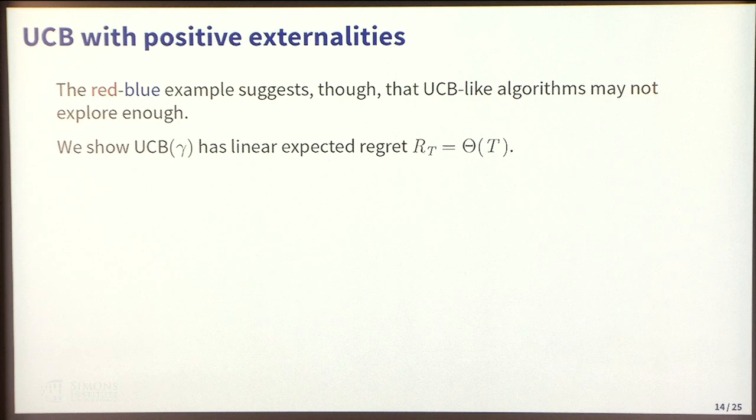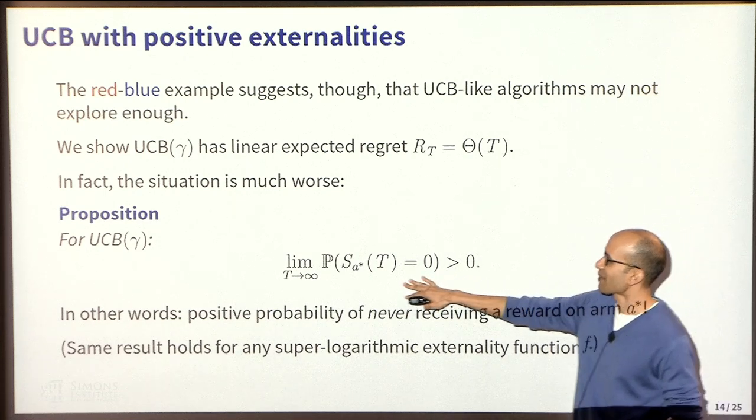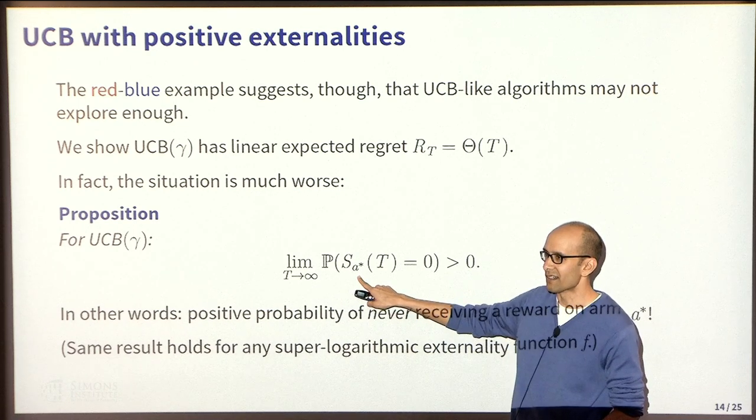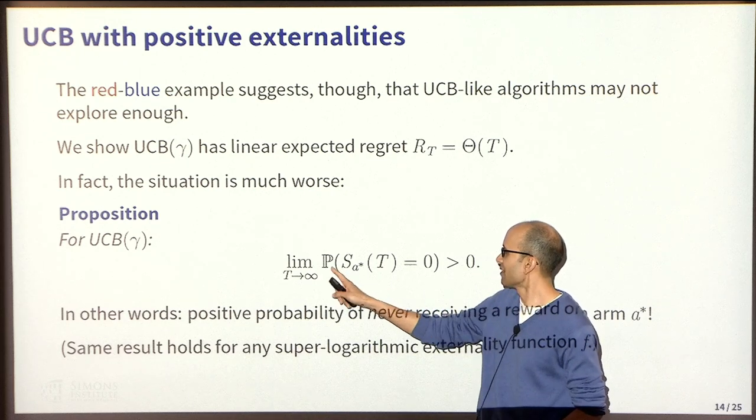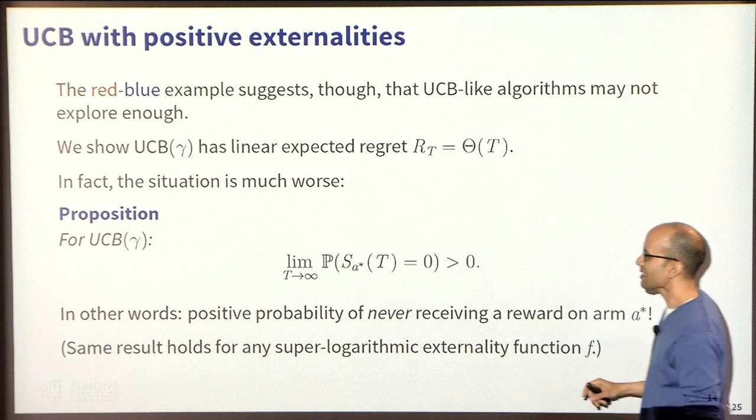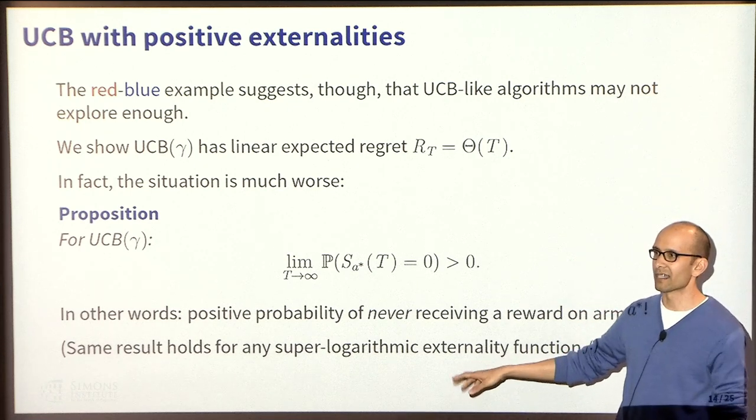What happens for this bandit algorithm with positive externalities? As I already mentioned, that red-blue example suggests there's at least a possibility something could go wrong. How severe is that? It turns out to be actually quite bad. We show that UCB has linear expected regret. That's about as bad as you could do - doing nothing would give you linear expected regret. But in fact, the situation is much worse than that. What I'm asking here is what is the probability that my algorithm never sees a reward when it pulls A star? If you think about what this is going to look like as T gets larger, the probability of never seeing a reward when I pull A star should get smaller because T is longer now. But nevertheless, it remains bounded away from zero. What this is saying is that there's a positive probability of never receiving a reward on arm A star with the UCB algorithm. This is actually the one result that holds fairly strongly. It will actually hold for any super logarithmic externality function F.